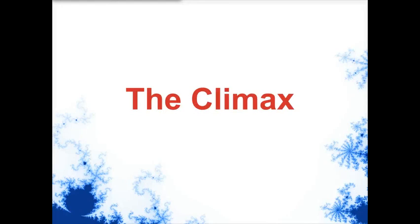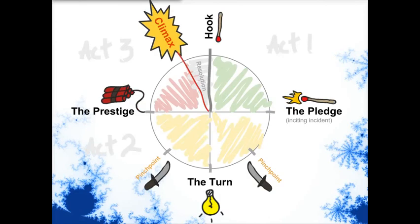Usually that prestige incident is a very important moment that changes everything for the third time and also for the last time. At that point, everything plays out to the climax, where the tension set up in the inciting incident or the pledge is now fulfilled. All the stress from that conflict is then relieved, the audience relaxes, and then you move into the resolution where all the loose ends get tied up, and essentially the cycle is complete.